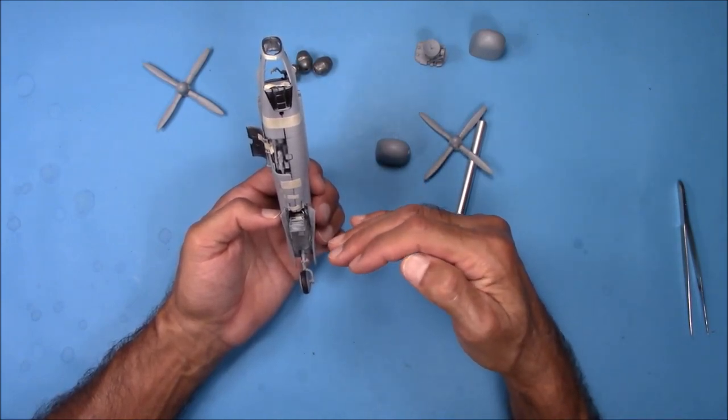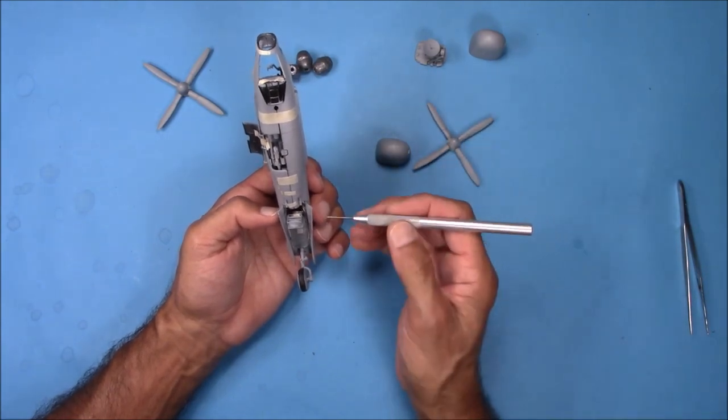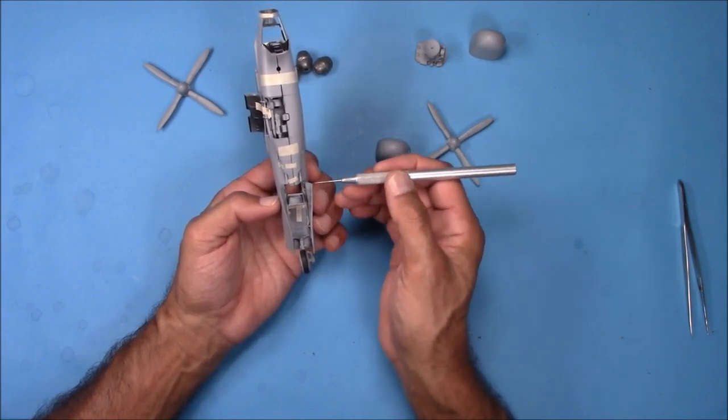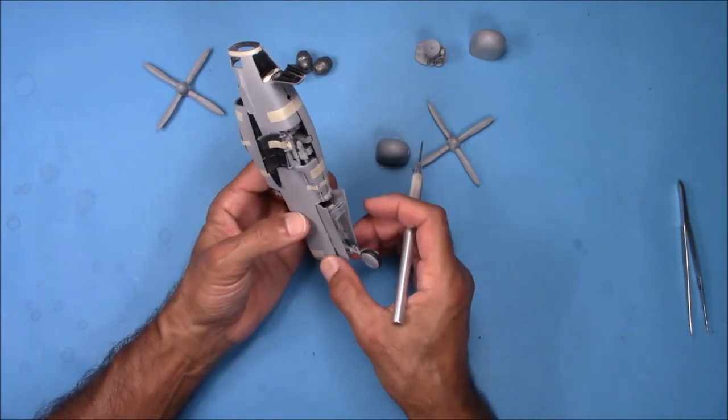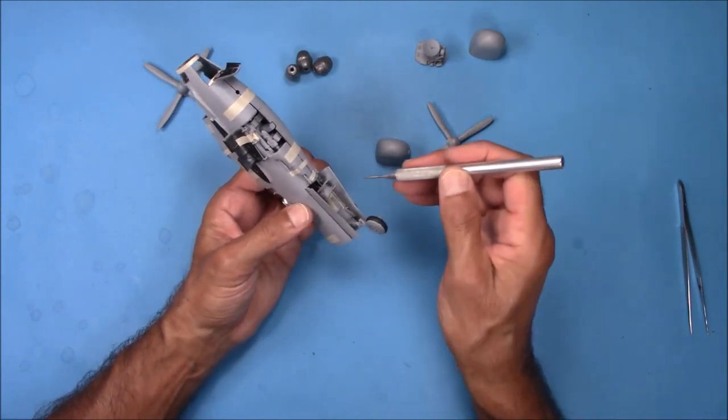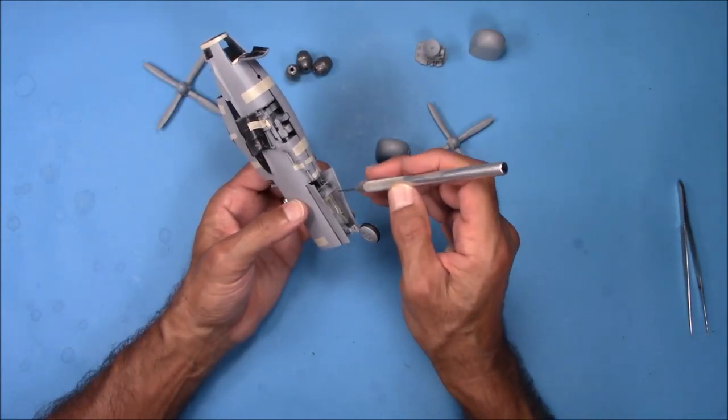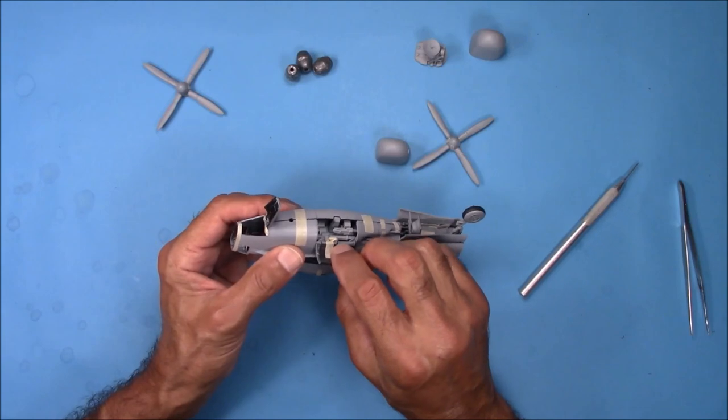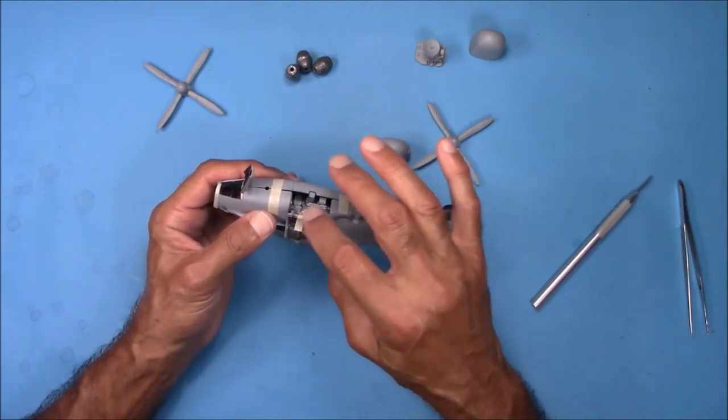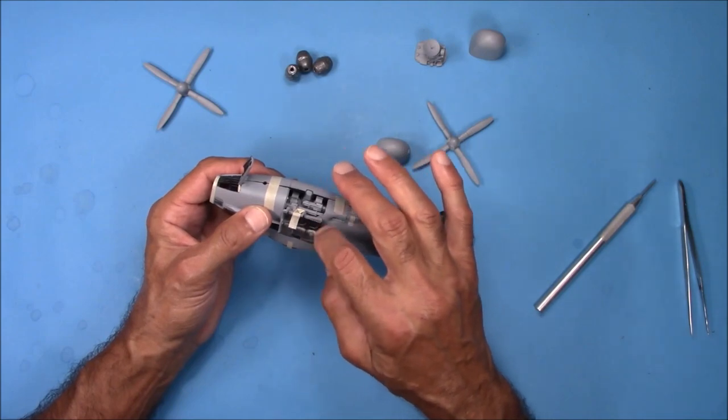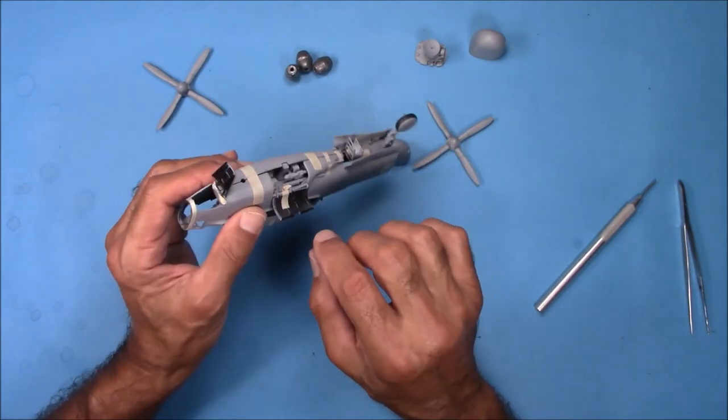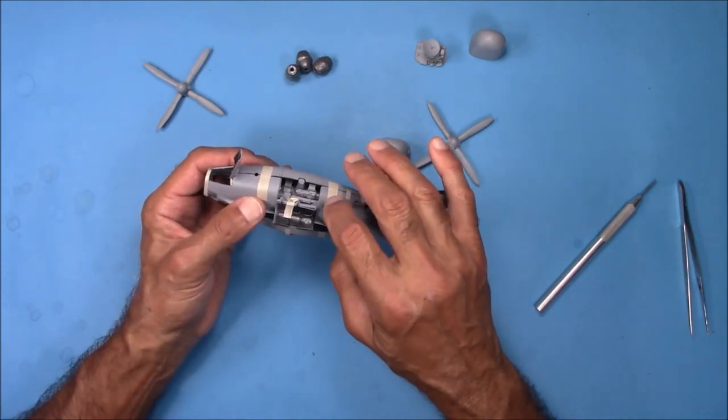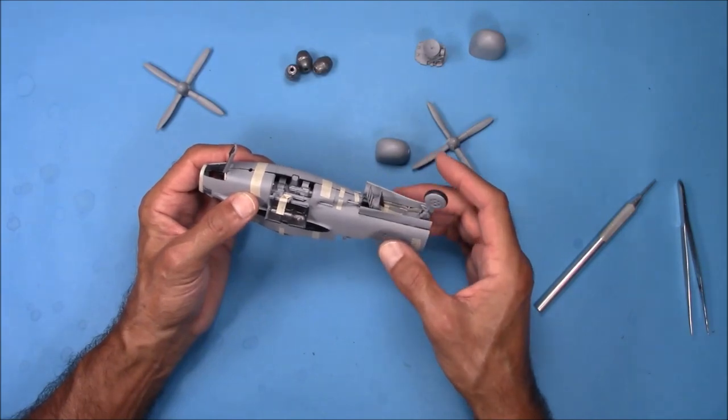The forward entryway has the guide pins set this a little bit cocked to the right, so you're going to have to be careful when you glue this into place to make sure that this sits correctly. I think you can just about see how it's skewed a little bit to the right. Just be mindful of that. The front landing gear doors, there's some nice detail on the inside, and they fit very well.